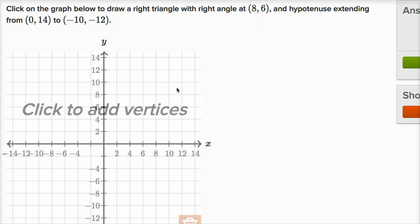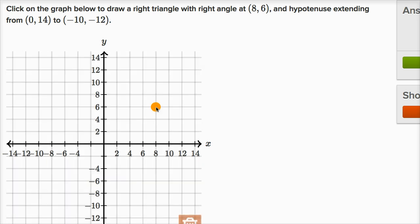It says click to add vertices, so let's do that. We have one at eight comma six, x equals eight, y is equal to six.